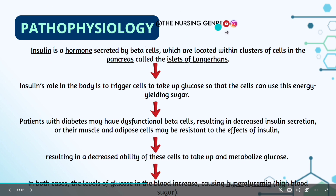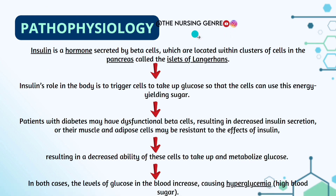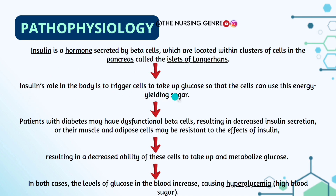Pathophysiology: Insulin is a hormone secreted by the beta cells, which are located within the clusters of cells in the pancreas called islets of Langerhans. The islets of Langerhans have alpha cells and beta cells; insulin is produced and secreted by the beta cells. Insulin's role in the body is to trigger cells to take up glucose so that the cells can use this energy-yielding sugar.